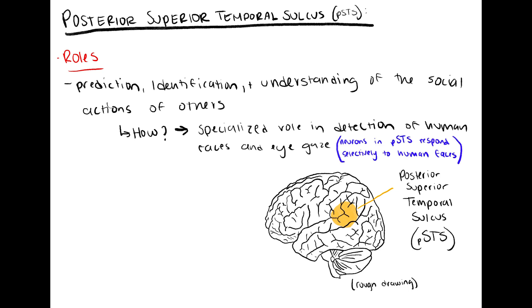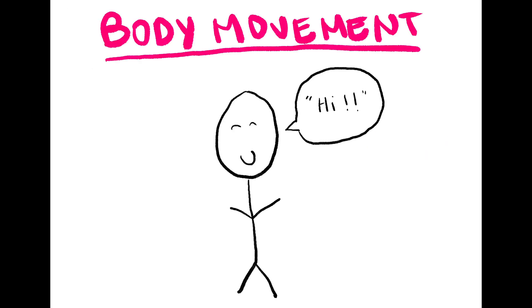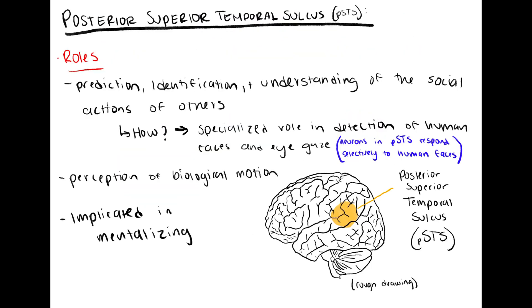Neurons in the PSTS respond selectively to human faces. The PSTS is also involved in the perception of biological motion, that is, body movement opposed to object movement. The PSTS has also been implicated in mentalizing.